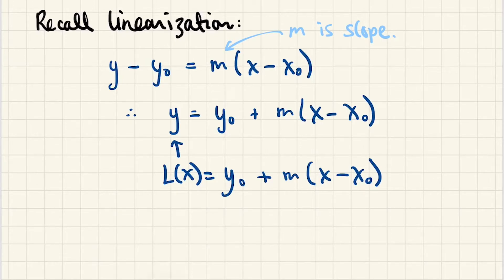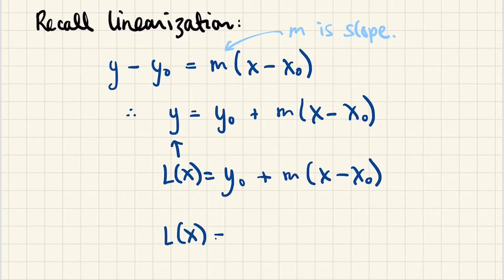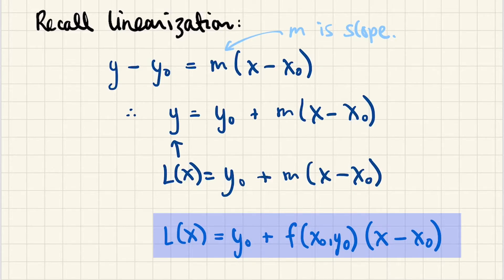And can we get the slope here? Absolutely we can. We have the differential equation in normal form, which means that we have y' = f(x,y). So that's exactly what m is. So L(x) = y₀ + the slope at the point of tangency multiplied by (x - x₀). So this is our linearization function for the point (x₀, y₀).